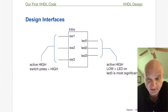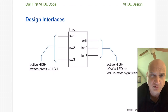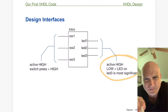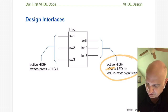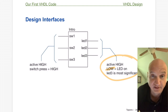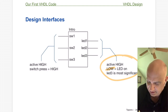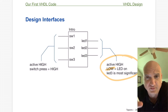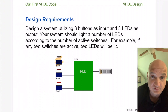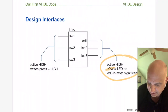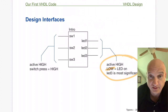On the output side, we have an active-high LED, meaning when the output is high the LED is on. LED three is the most significant bit — that's an important thing to designate. In our bar display, the leftmost bit was the least significant and the right one was the most significant. So we're calling LED three the most significant and LED one the least significant in this particular case.